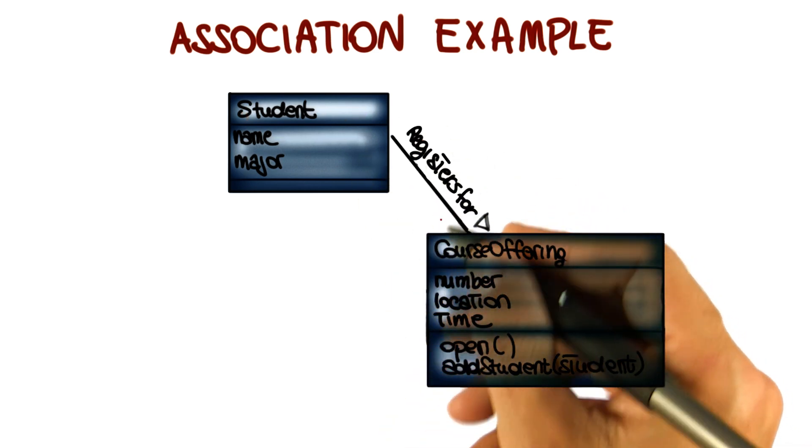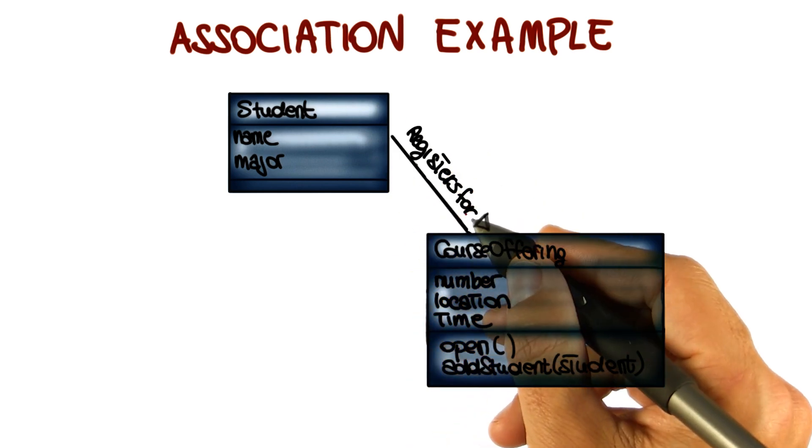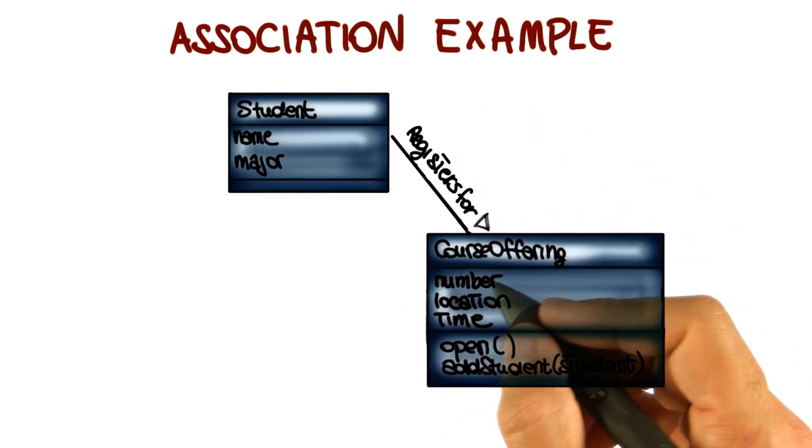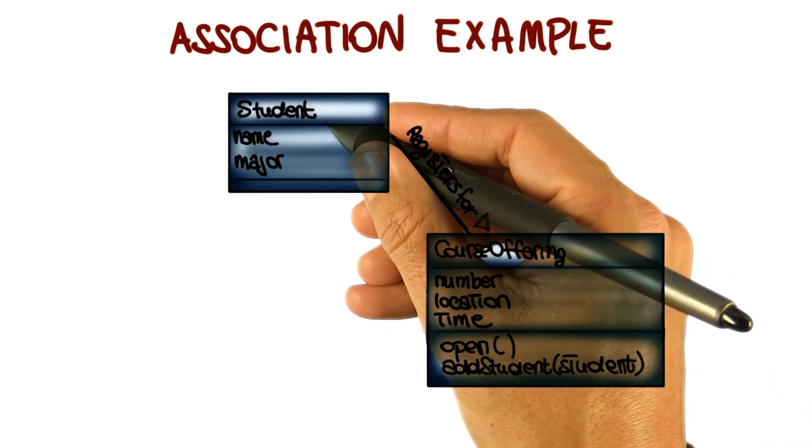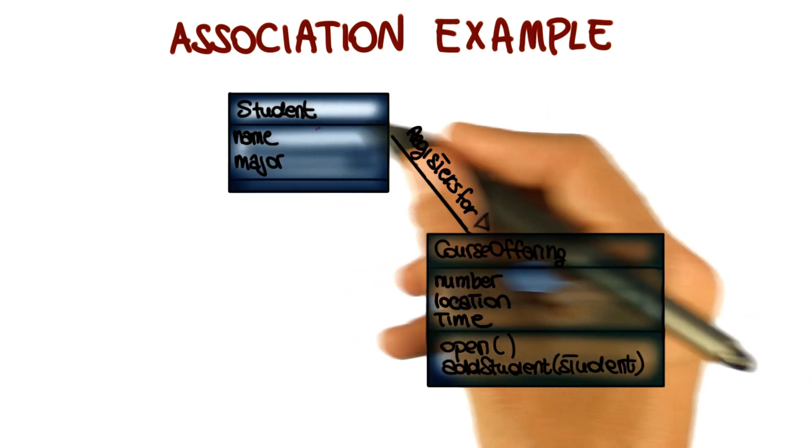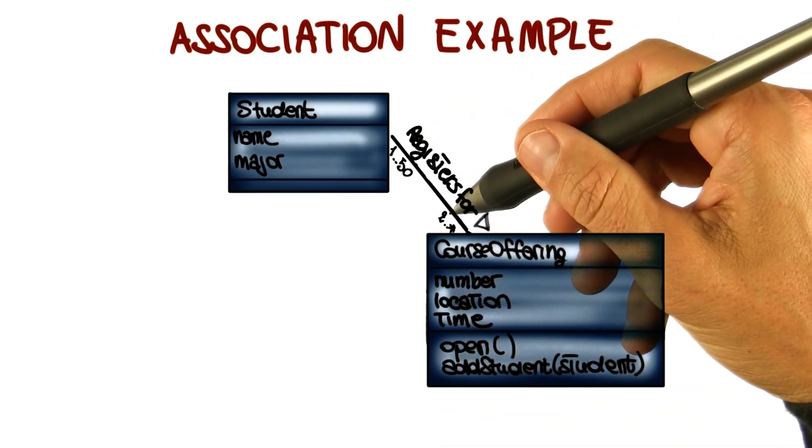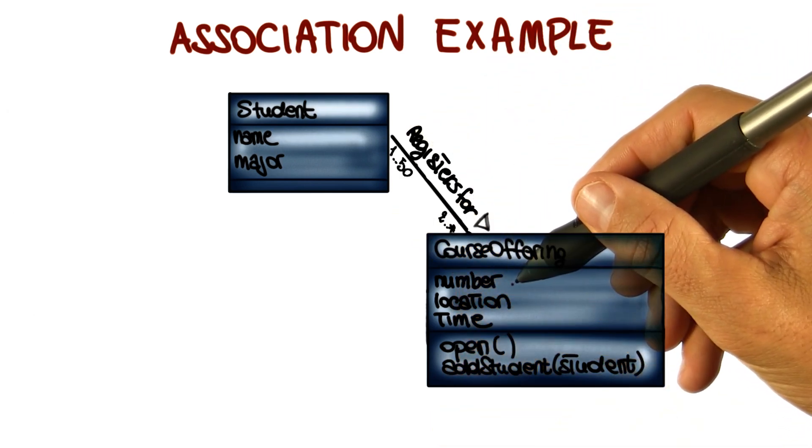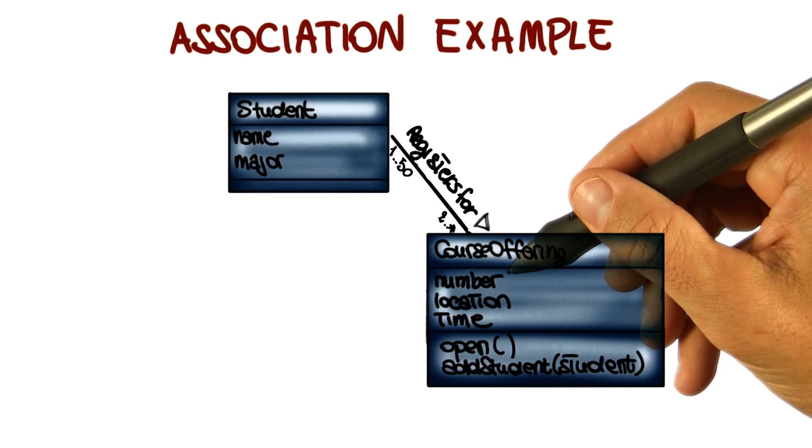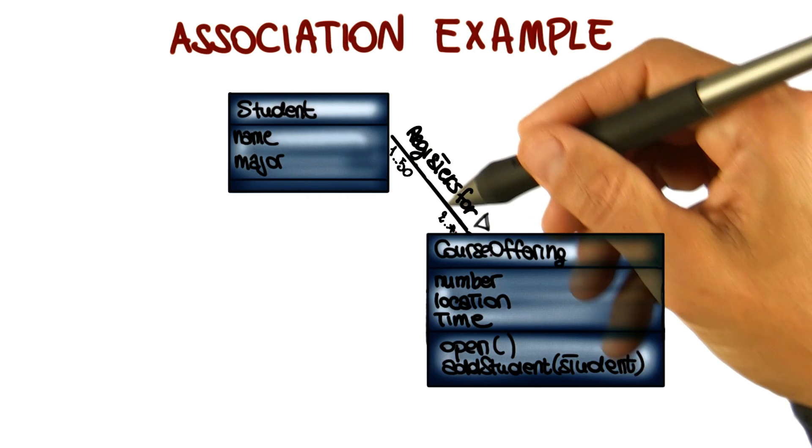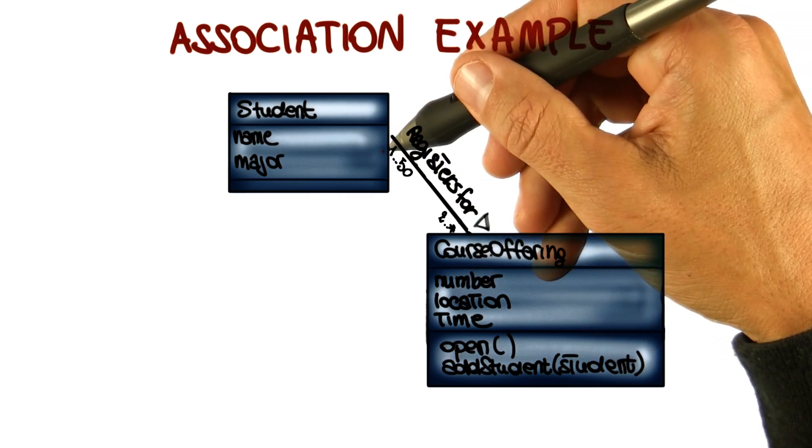Another important adornment or annotation that we can put on an association is multiplicity. Multiplicity defines the number of instances of one class that are related to one instance of the other class. We can define multiplicity at either end of the relationship. In this case, for instance, we can say that if we look at the Student, the student can register for two or more course offerings, whereas if we look at the course offering, each course offering can have or can enroll between one and fifty students.